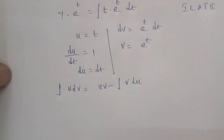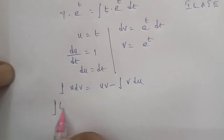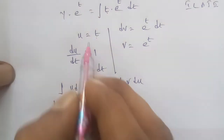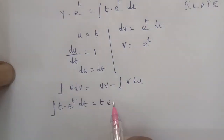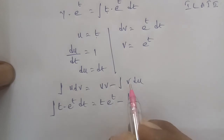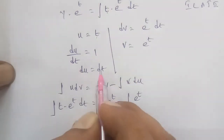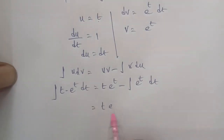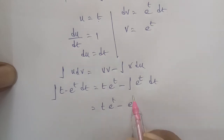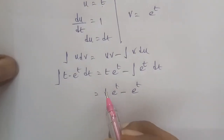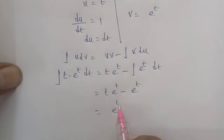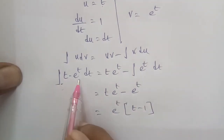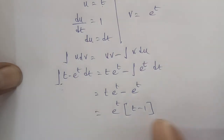So integral of t into e power of t dt equals u into V minus integral of V into du, which gives t into e power of t minus integral of e power of t dt. This equals t into e power of t minus e power of t. Taking e power of t as common, integral of t e power of t dt equals e power of t into (t minus 1).